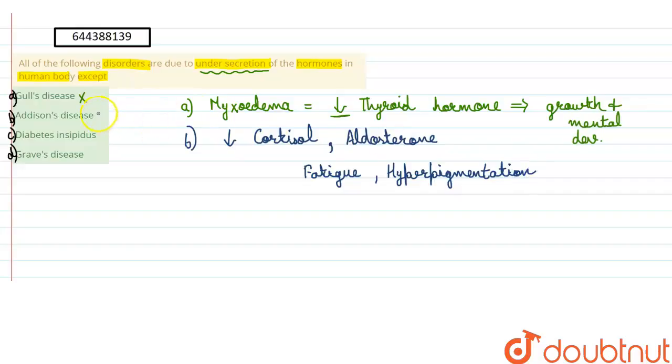The next option is diabetes insipidus. Now it is caused by a decrease in the ADH or antidiuretic hormone and what basically happens is there is water electrolyte imbalance in the body.